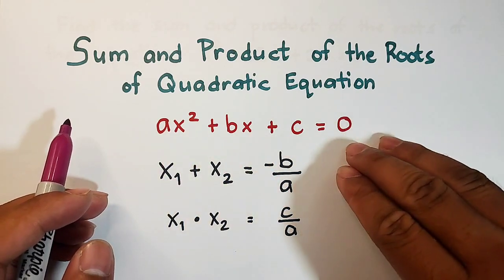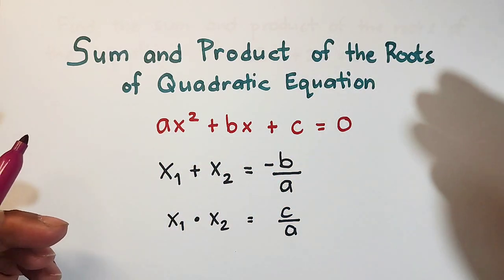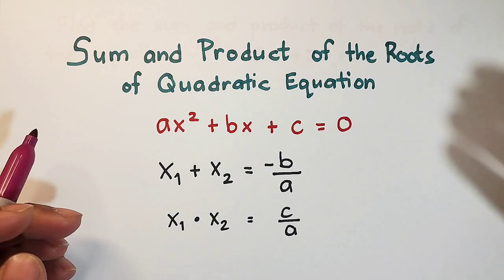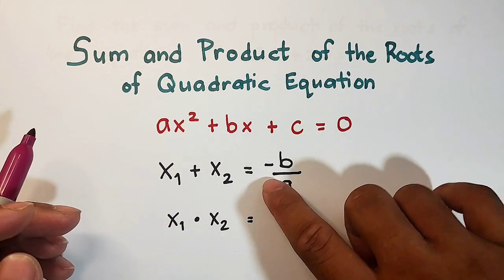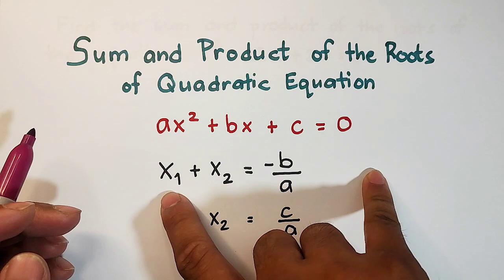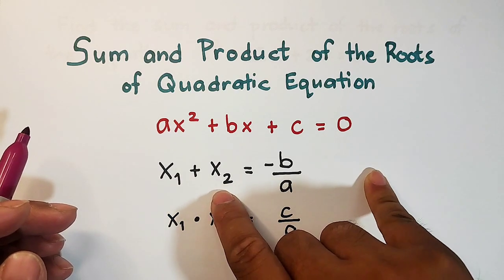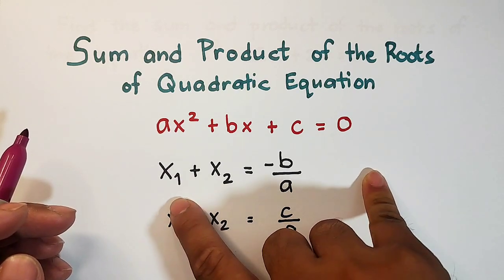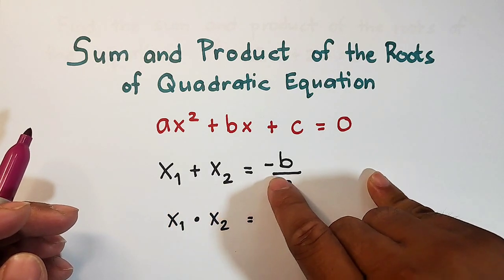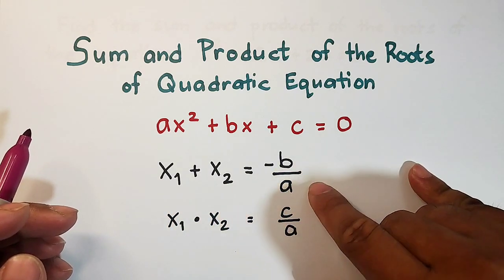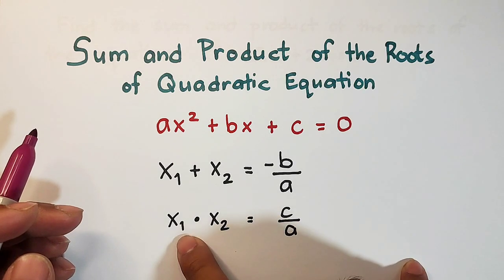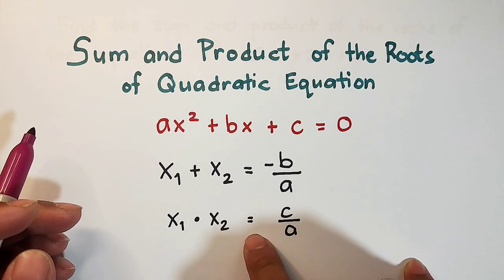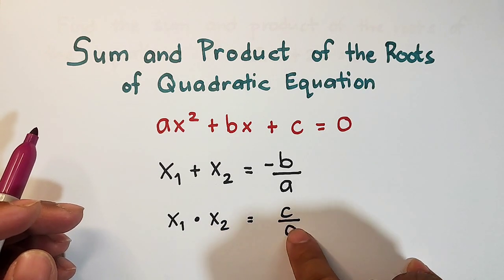This is the standard form of any quadratic equation, and the formula in getting the sum and the product of the roots is simply: x sub 1 plus x sub 2 is equal to negative b over a. While the product is x sub 1 times x sub 2 is equal to c over a.